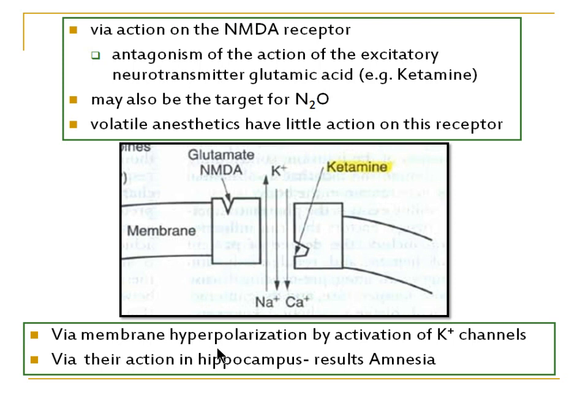General anaesthesia also acts through hyperpolarization by opening potassium channels — efflux of potassium from the cell causes hyperpolarization. General anaesthesia is also claimed to act through its action on the hippocampus, resulting in amnesia.